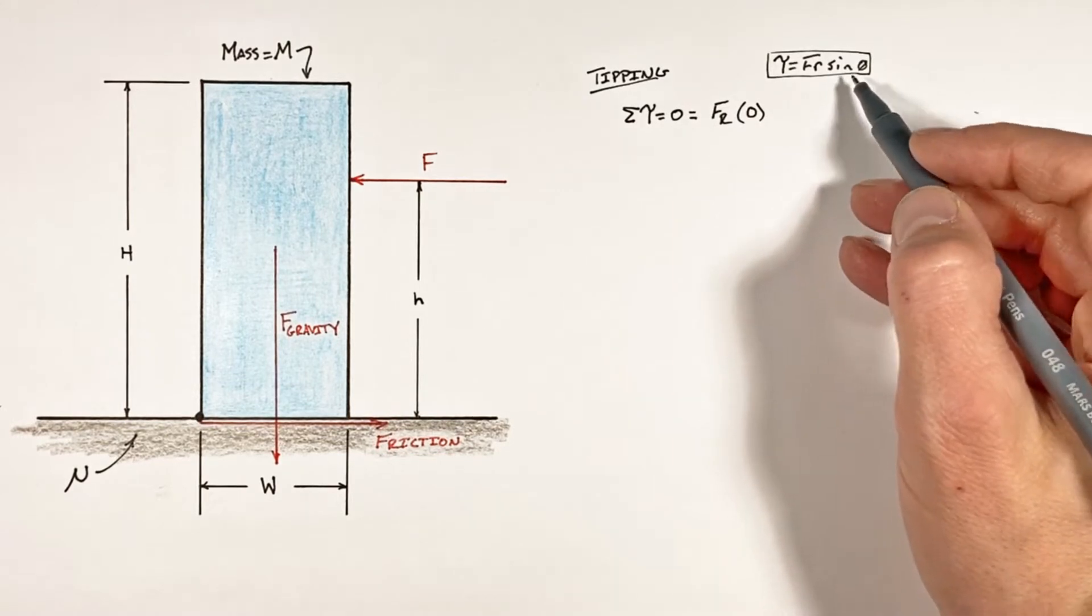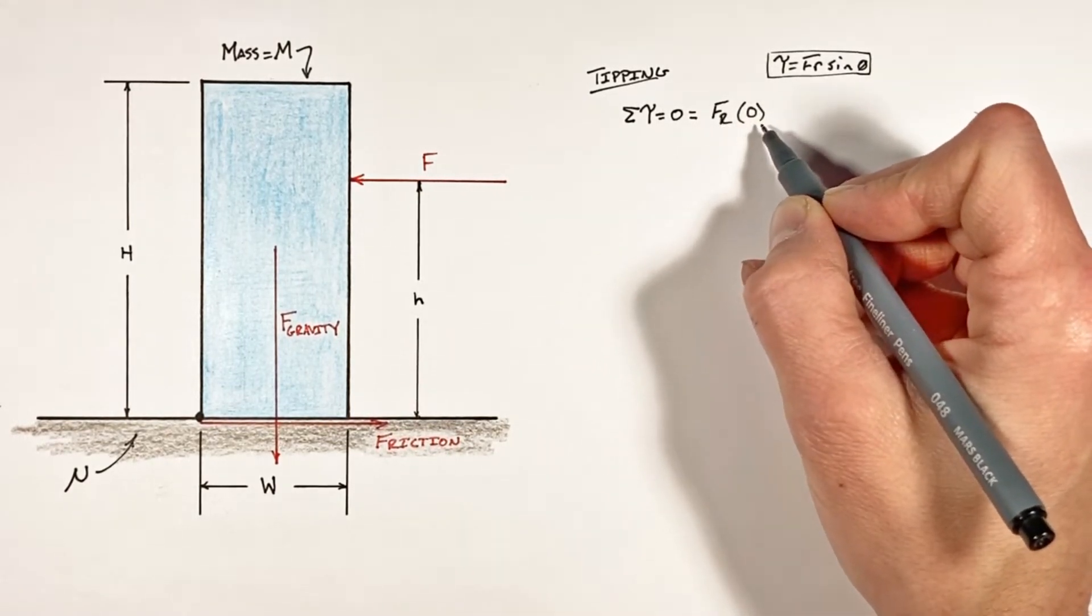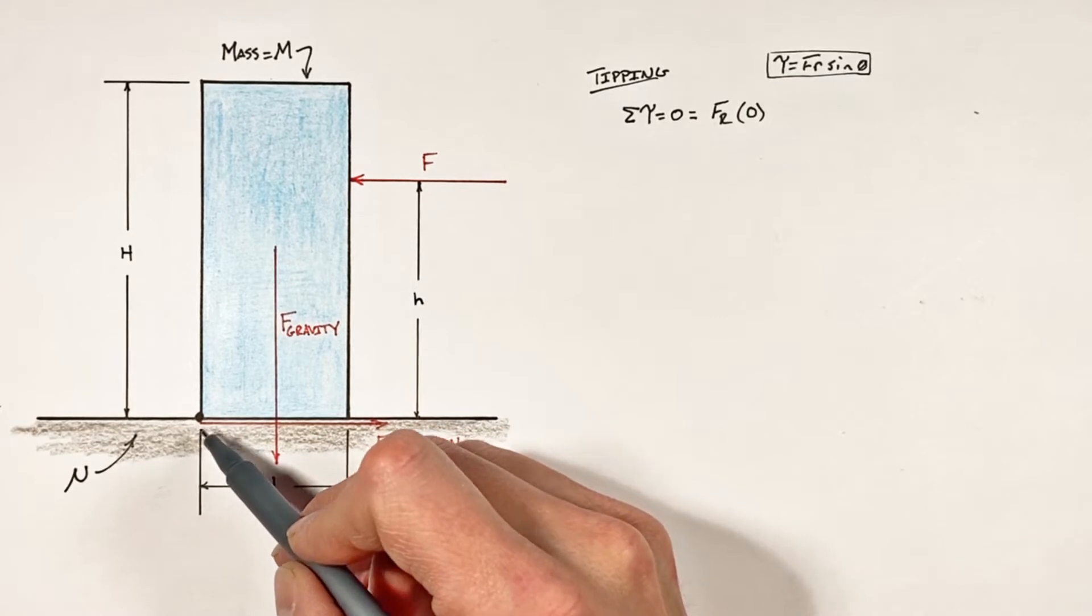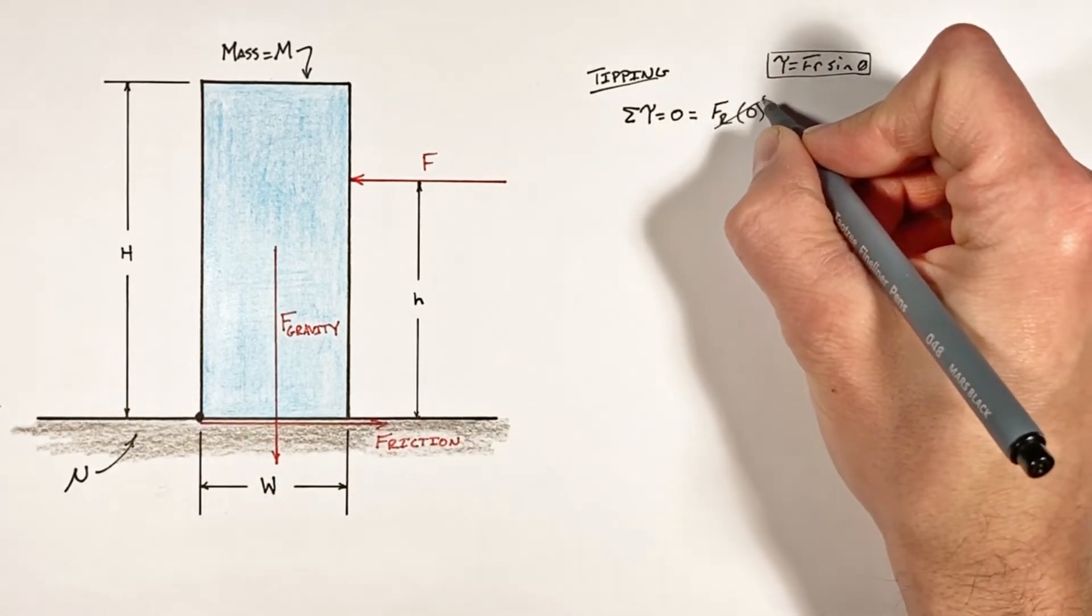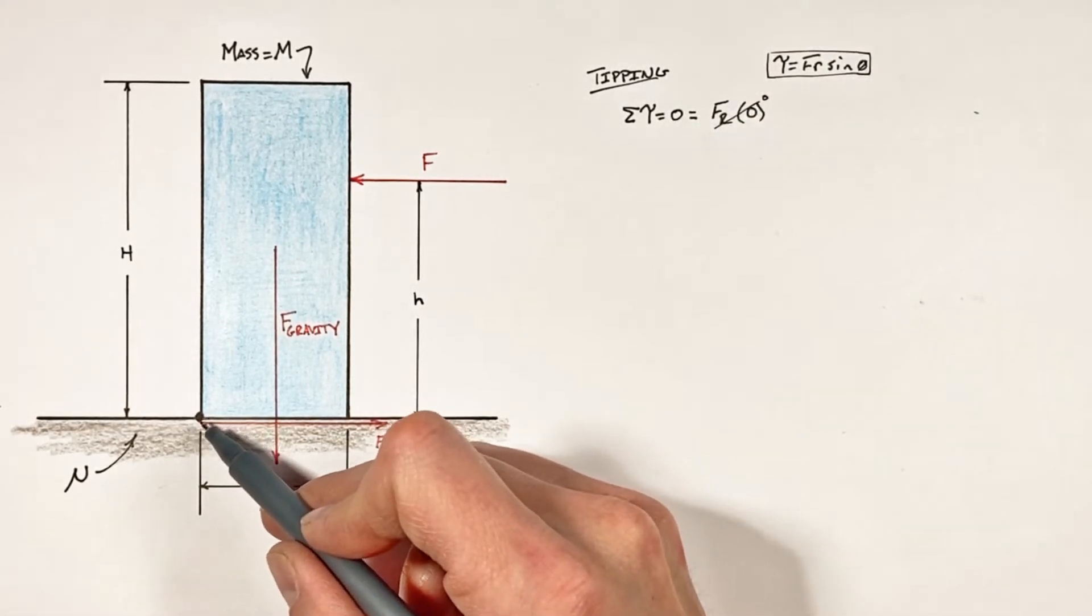So when we multiply this friction force by the radius at which it's acting relative to the pivot point of zero, we find friction produces no torque around this point.